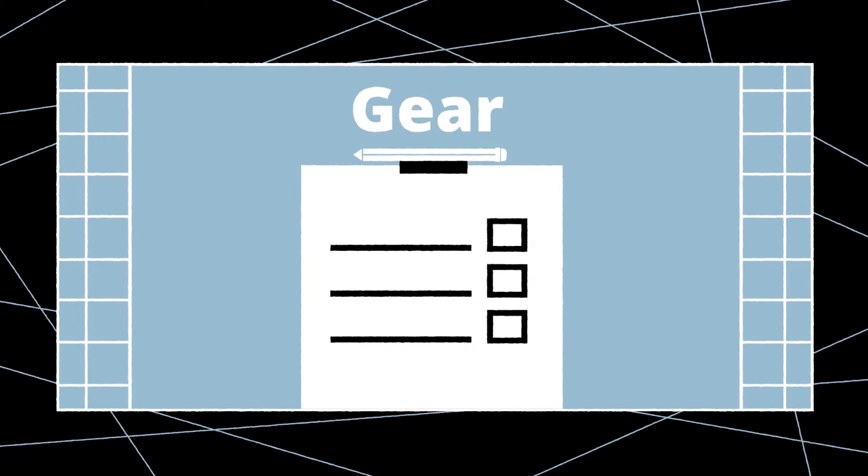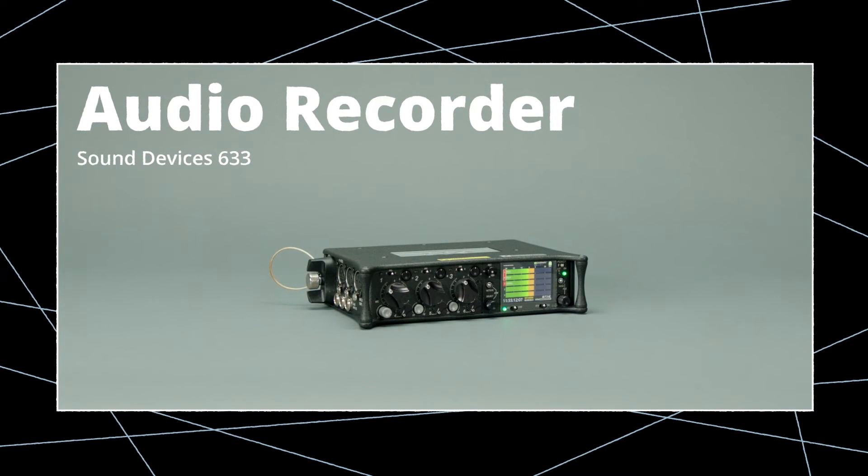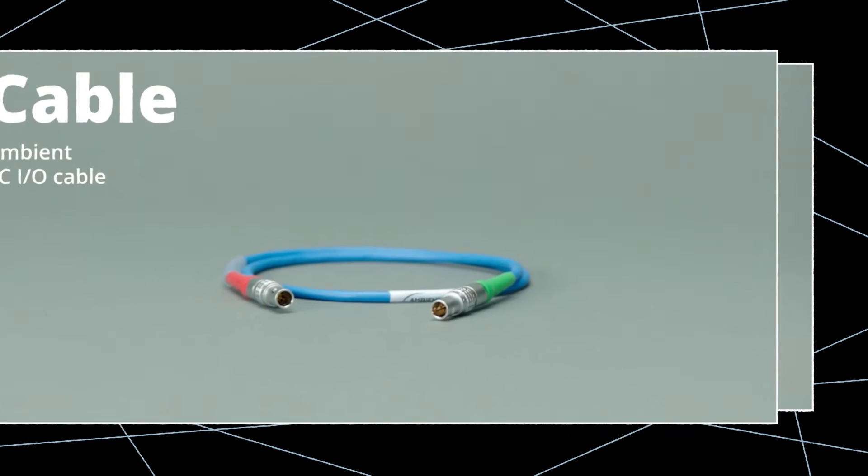Before we get started, let's take a brief look at the required gear. Of course, you'll need an ARRI ALEXA, a timecode-capable audio recorder with built-in locket circuitry or an external locket. You will need a locket device and a TC-IO cable.